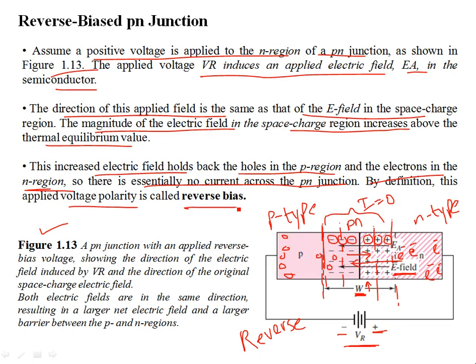Reverse bias or forward bias has to do with the polarity. In forward bias, the terminals are reversed — the positive is connected to the P-type and the negative is connected to the N-type, and you can guess that the depletion width is going to decrease. The reverse bias or forward bias of a PN junction has to do with the polarity of the external bias.